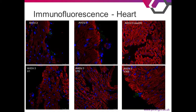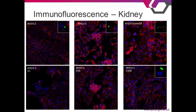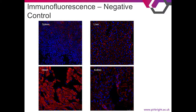The heart was an unusual case. AHSV-3 v1, which has been the most pathogenic throughout, showed no VP7 staining to any great extent in the heart. But there was VP7 staining in the AHSV-2 strain, which has been less pathogenic — visible on the edge of the heart tissue — and also in AHSV-6 and AHSV-3 v378. In the kidney, there were low levels of VP7 staining across all strains. Negative control images confirm that the green signal does not appear without the virus.